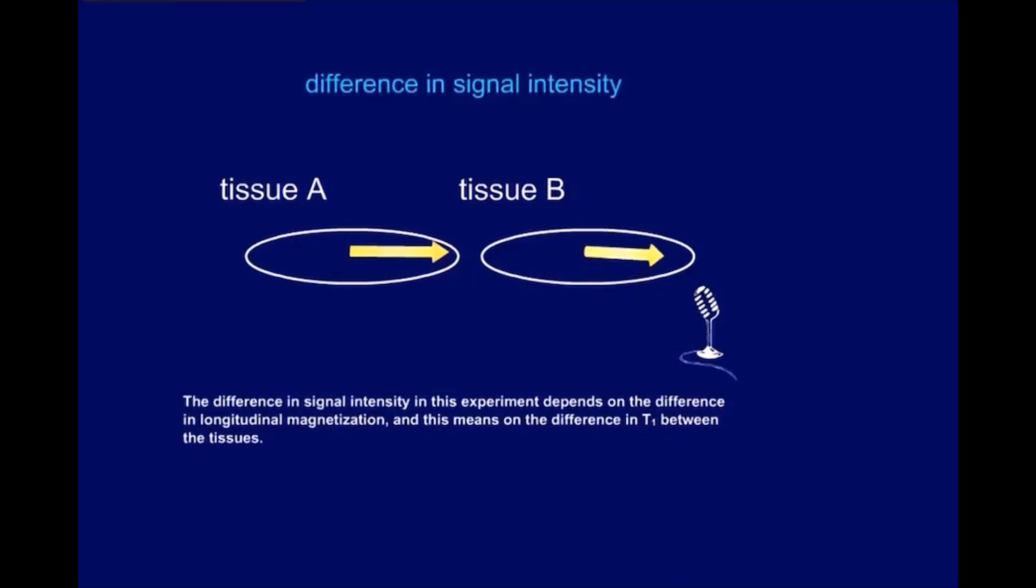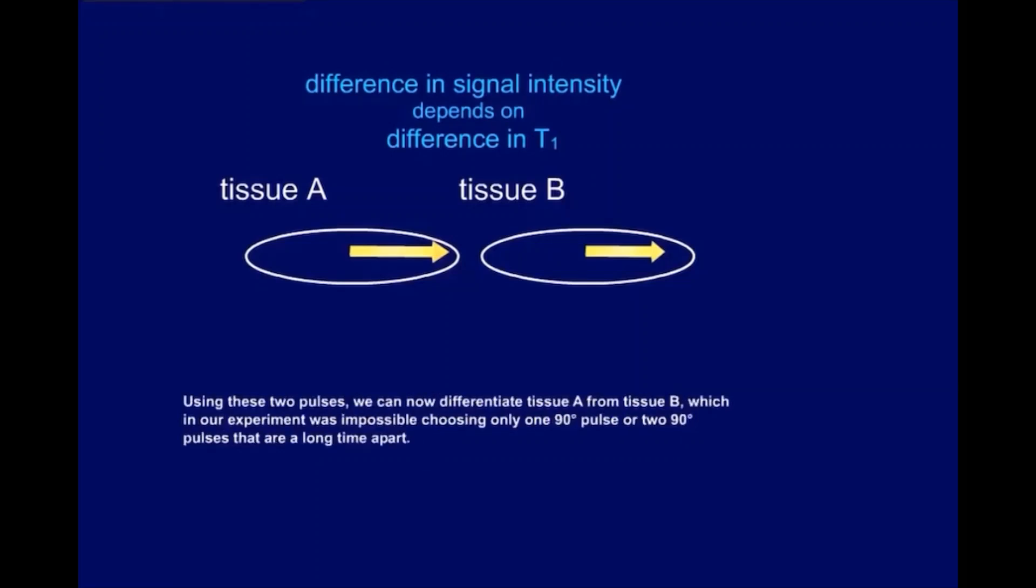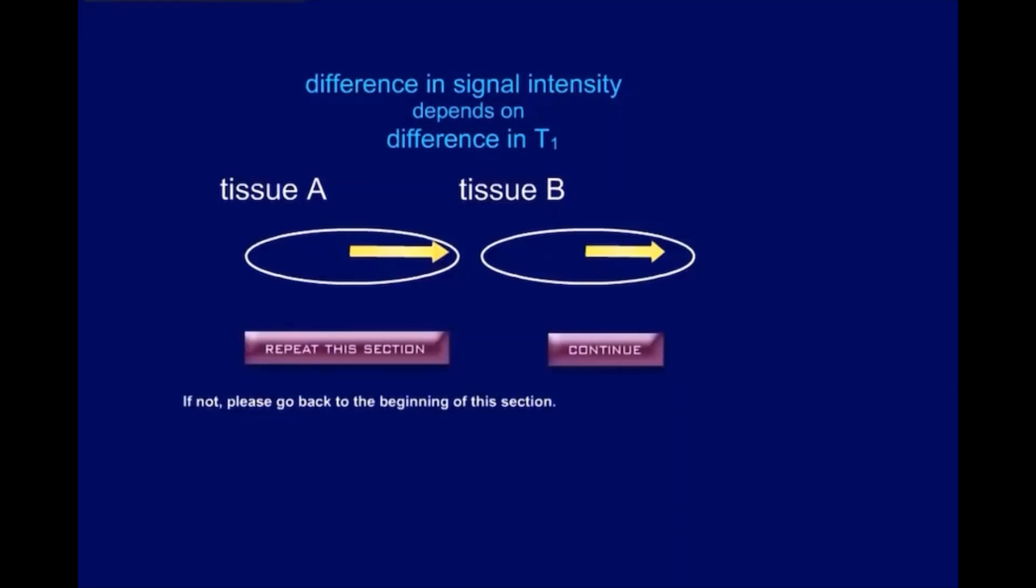The difference in signal intensity in this experiment depends on the difference in longitudinal magnetization, and this means on the difference in T1 between the tissues. Using these two pulses, we can now differentiate tissue A from tissue B, which in our experiment was impossible choosing only one 90 degree pulse or two 90 degree pulses that are a long time apart. Do you know why? If not, please go back to the start of this section.